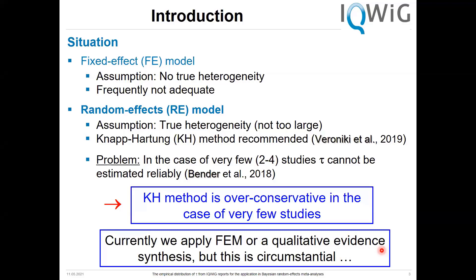For a couple of years, the Knapp-Hartung method, also called Hartung-Knapp-Sidik-Jonkman, has been recommended in practice. But we are faced with a problem that in the case of very few studies — two, three, or four studies — the heterogeneity parameter tau cannot be estimated reliably. So the Knapp-Hartung method is over-conservative in the case of very few studies. We currently either apply the fixed effect model, even where its assumption may be questionable, or we use a qualitative evidence synthesis. This is a circumstantial procedure and we want something better.